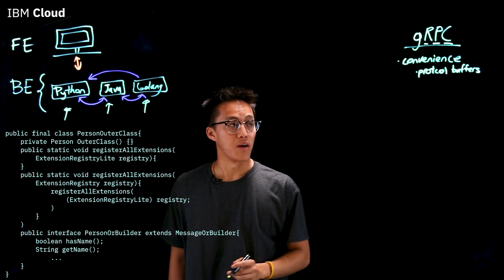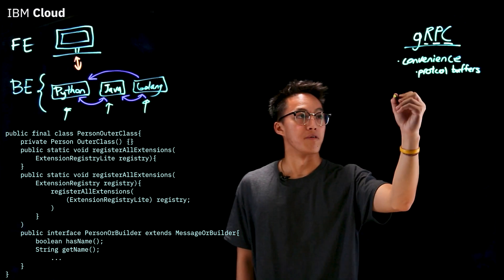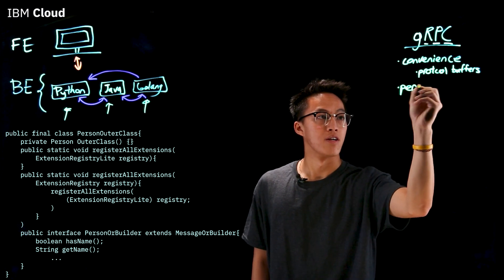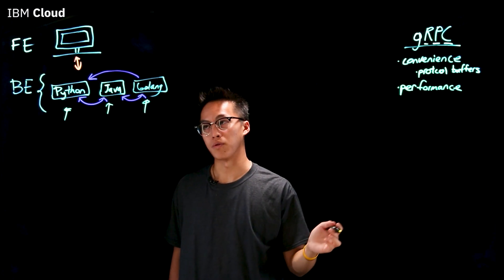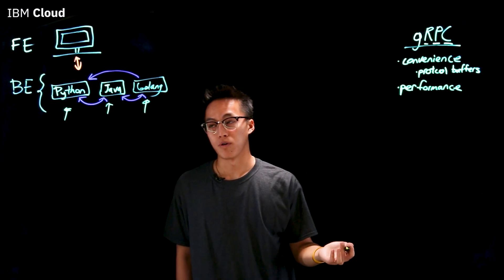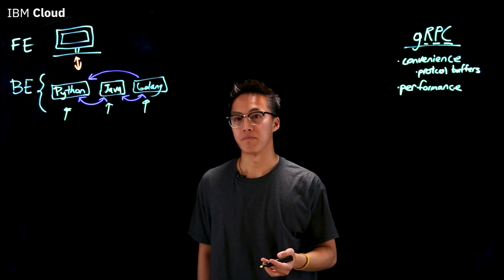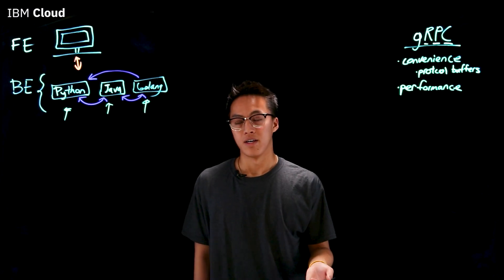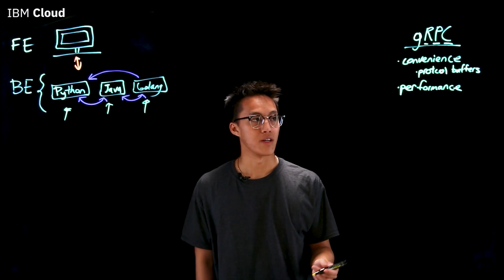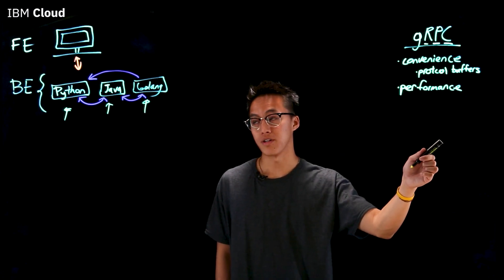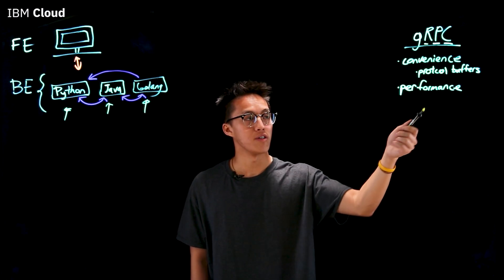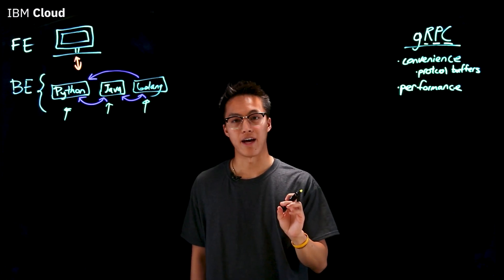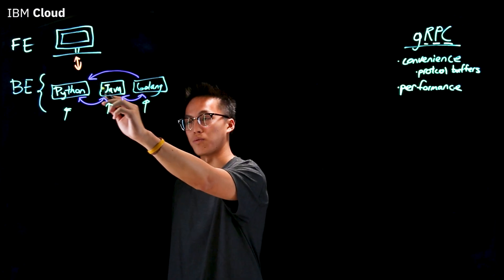Now the next point I want to talk about is performance. We already touched a bit about performance with HTTP 2.0 being a much more modern protocol than HTTP 1.1 that already delivers a significant number of improvements, but performance is further delivered with protocol buffers as protocol buffers are serialized and sent as binaries across the wire.